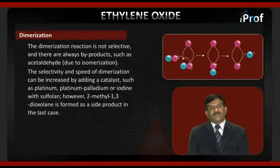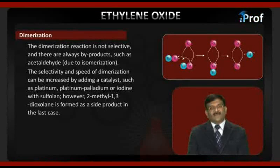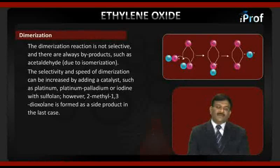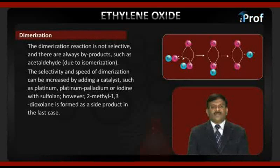The selectivity and speed of dimerization can be increased by adding a catalyst such as platinum, palladium, or iodine with sulfolane. However, 2-methyl-1,3-dioxane is formed as a side product in this case.